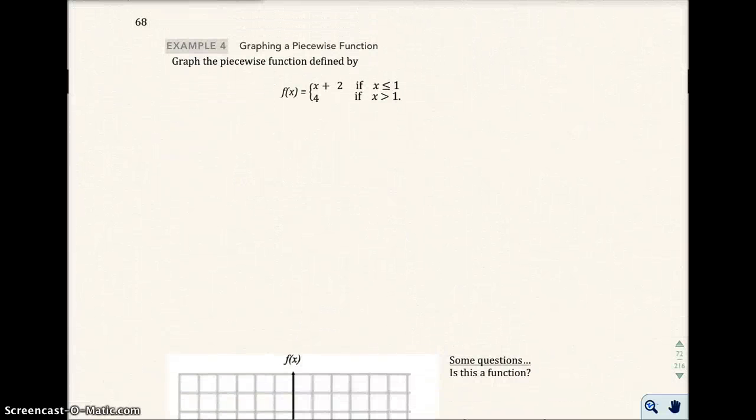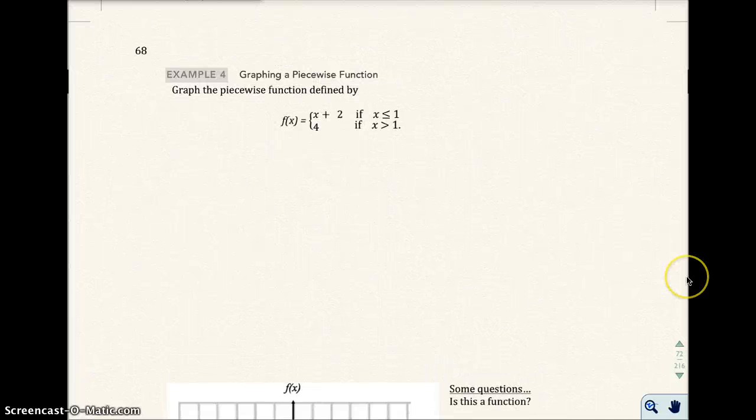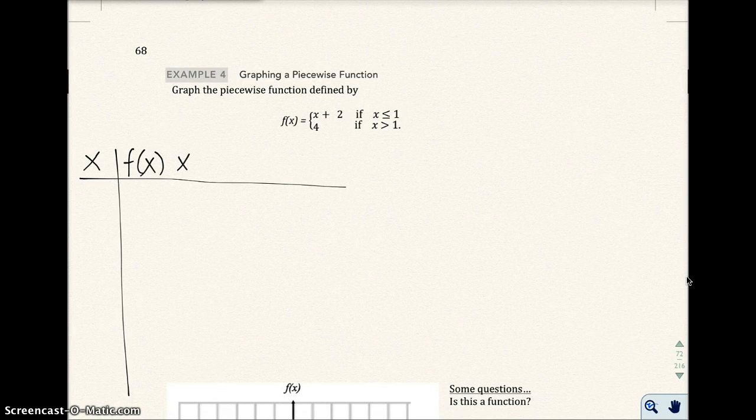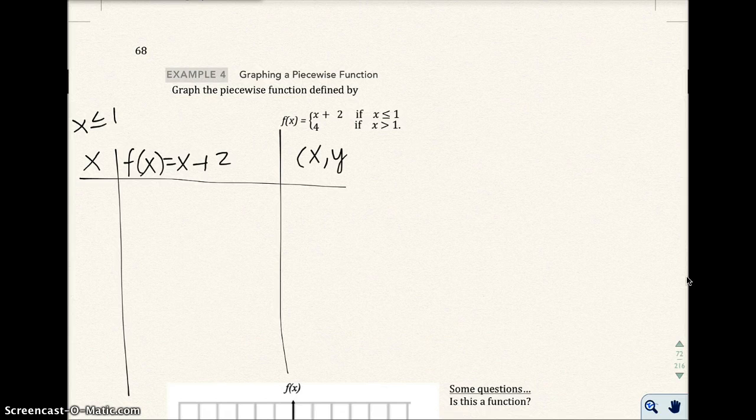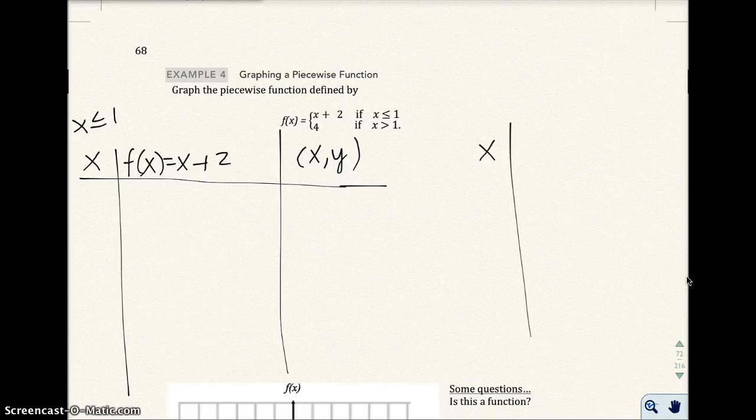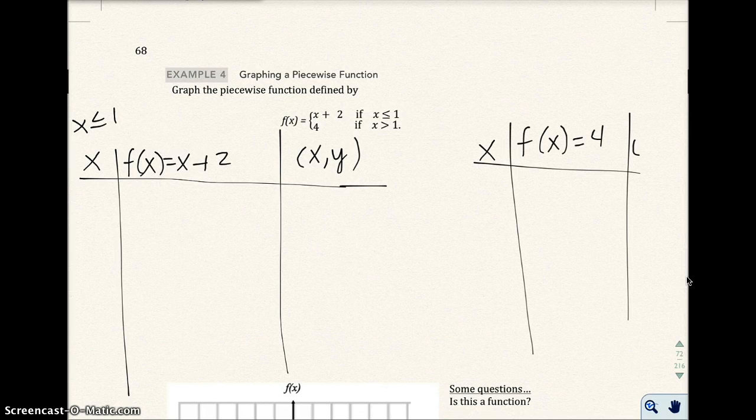We're still on the same topic, piecewise functions. This is what's going to be on your exam for sure. You're going to have one just like this. Graph the piecewise function defined by f(x) = x + 2 if x is less than or equal to 1, and f(x) = 4 if x is greater than 1. I'm going to make a table for each of these separate functions. I'll make a table for the first function, f(x) = x + 2, where x is less than or equal to 1.